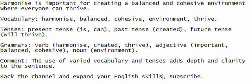Comment: The use of varied vocabulary and tenses adds depth and clarity to the sentence. Engage in listening, speaking, understanding, and writing to boost your English. Harmonize is important for creating a balanced and cohesive environment where everyone can thrive. Vocabulary: harmonize, balanced, cohesive, environment, thrive. Tenses — present: is; past: created; future: will thrive. Grammar — verbs: harmonize, created, thrive. Adjectives: important, balanced, cohesive. Noun: environment.